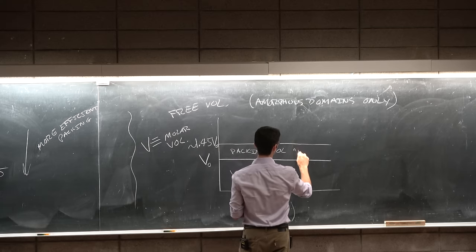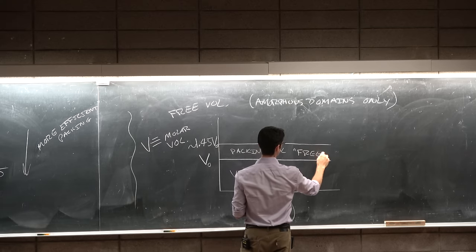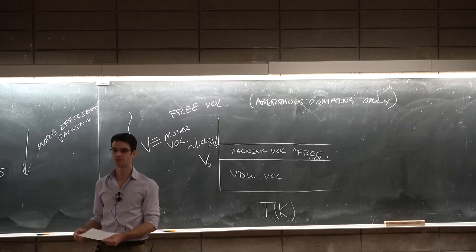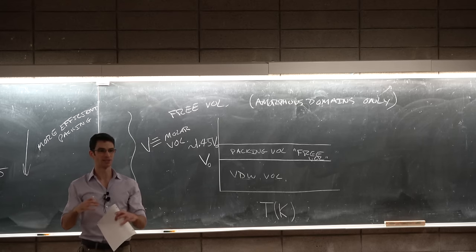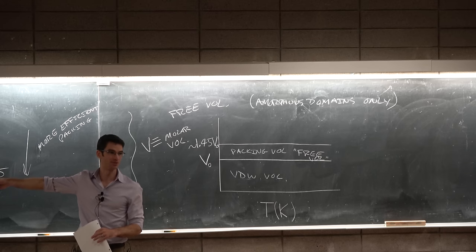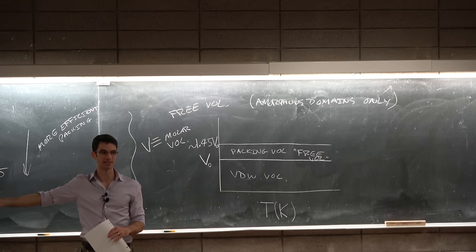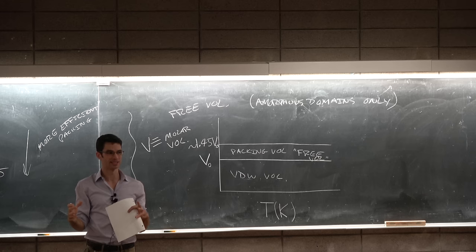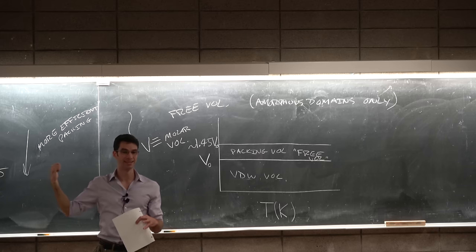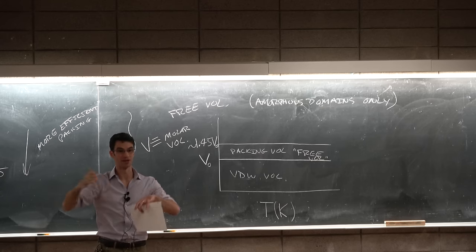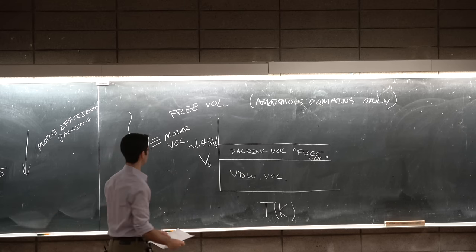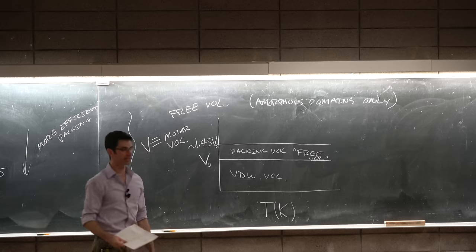I don't know if anyone has ever purchased a gumball from a gumball machine besides me. Anyway, the gumball machine effect is the fact that we can't pack these things infinitely closely. So we have maybe about 45% bigger depending on the polymer. 1.45 V naught is this band and this is the packing volume or the free volume.